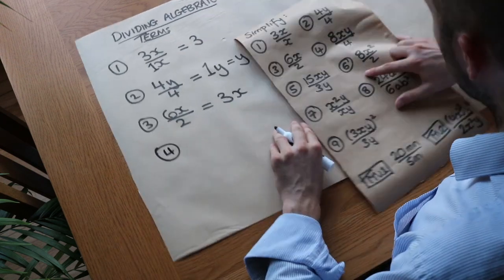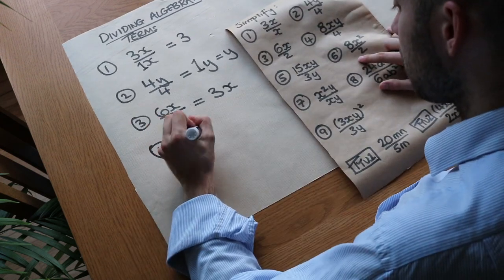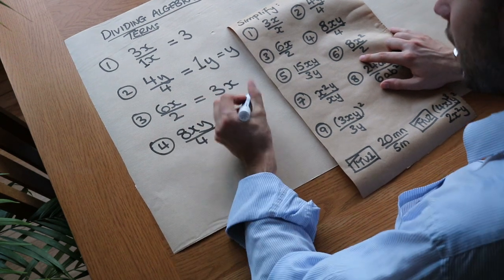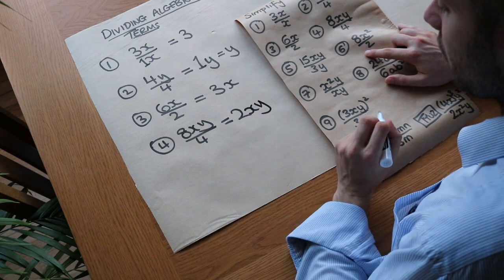What about the fourth one? We've got 8xy divided by 4. Well 8 divided by 4 is 2 and we've still got both the x and the y, so it'd be 2 lots of xy.